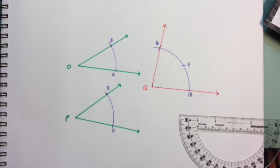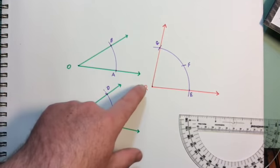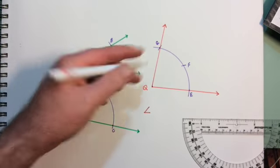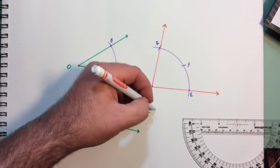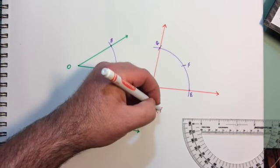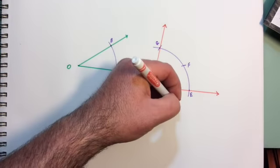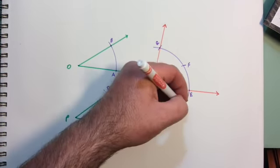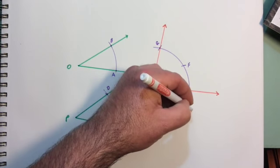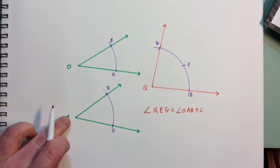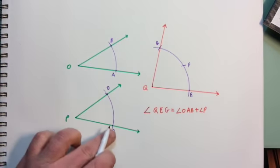And that triangle is equal. The way you would write this is: angle QEG is equal to angle OAB plus angle PCD.